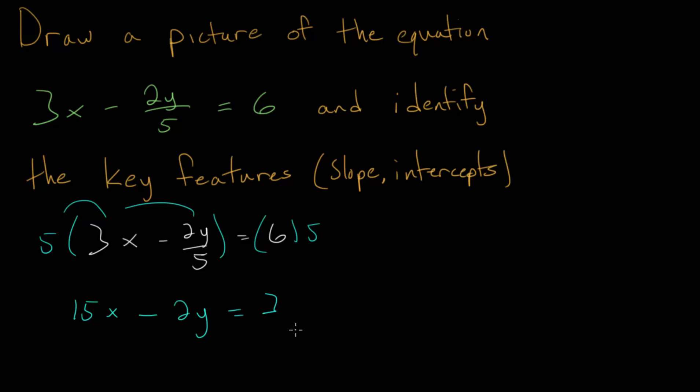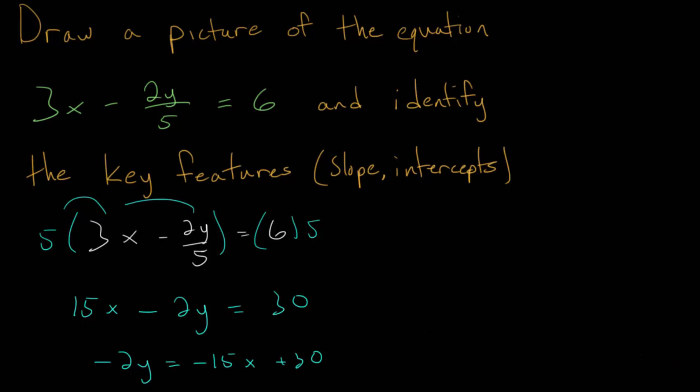Now, at this point, we can move the 15x to the other side, so that we get minus 2y is minus 15x plus 30. We just subtracted 15x on each side. And in this final step, we can divide everything by negative 2. We do that to cancel out the coefficient on y, so that we just get y by itself.